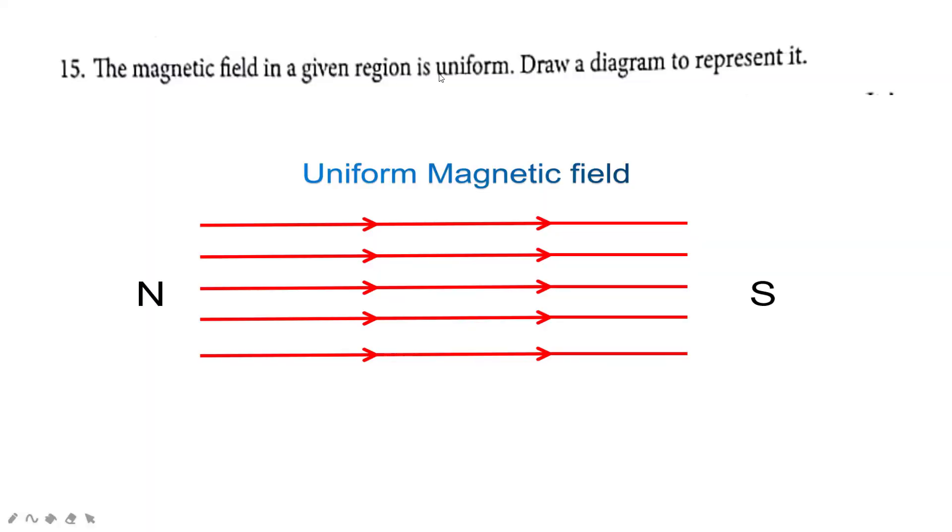The magnetic field in a given region is uniform. Draw a diagram to represent it. Look at this diagram and draw the uniform magnetic field as in this picture.